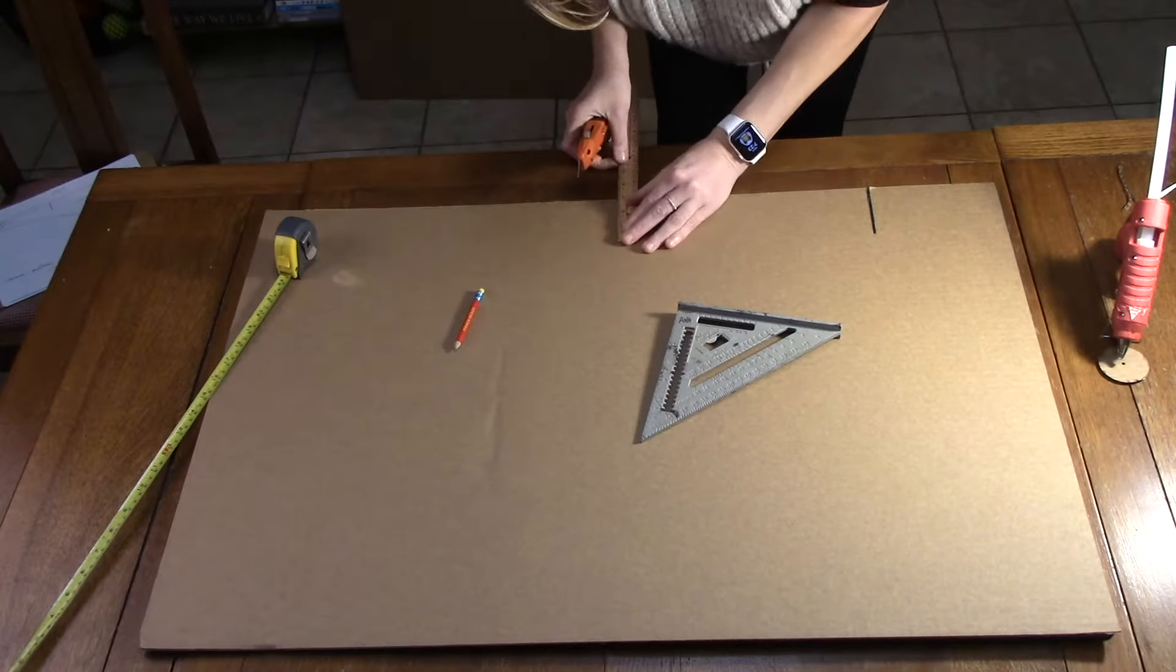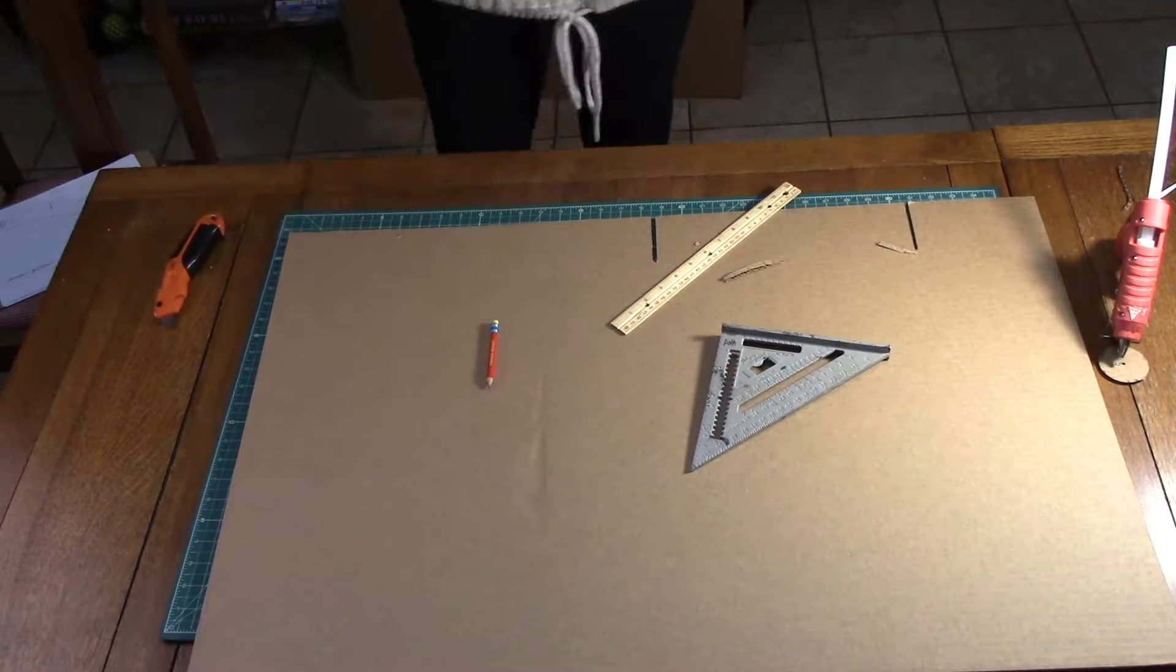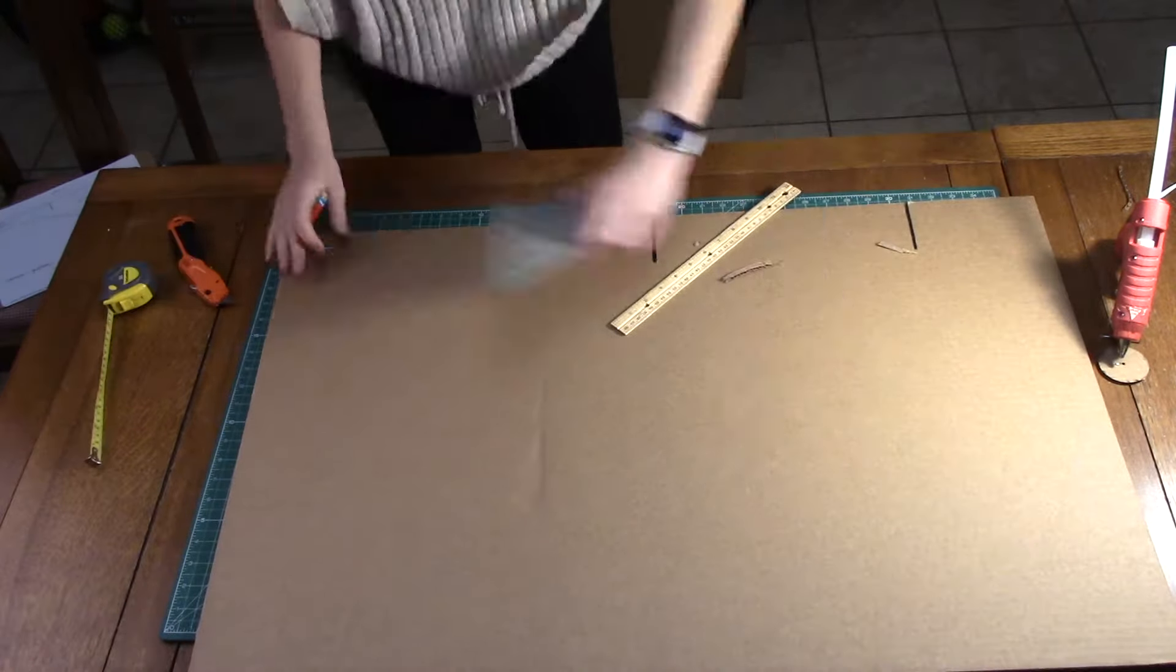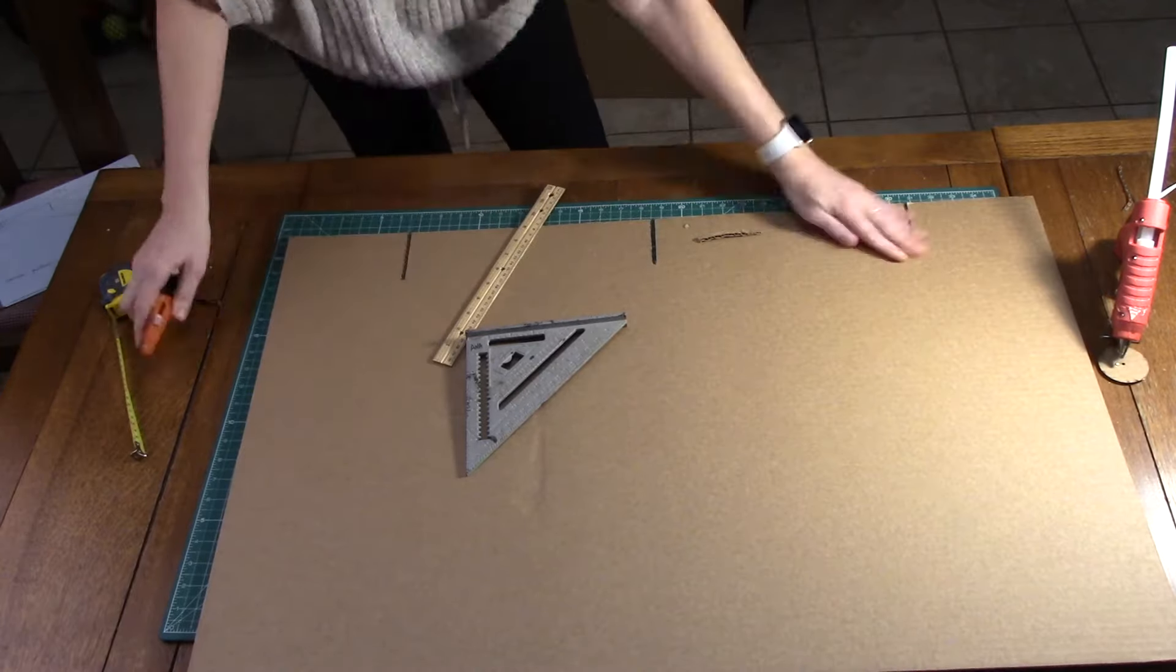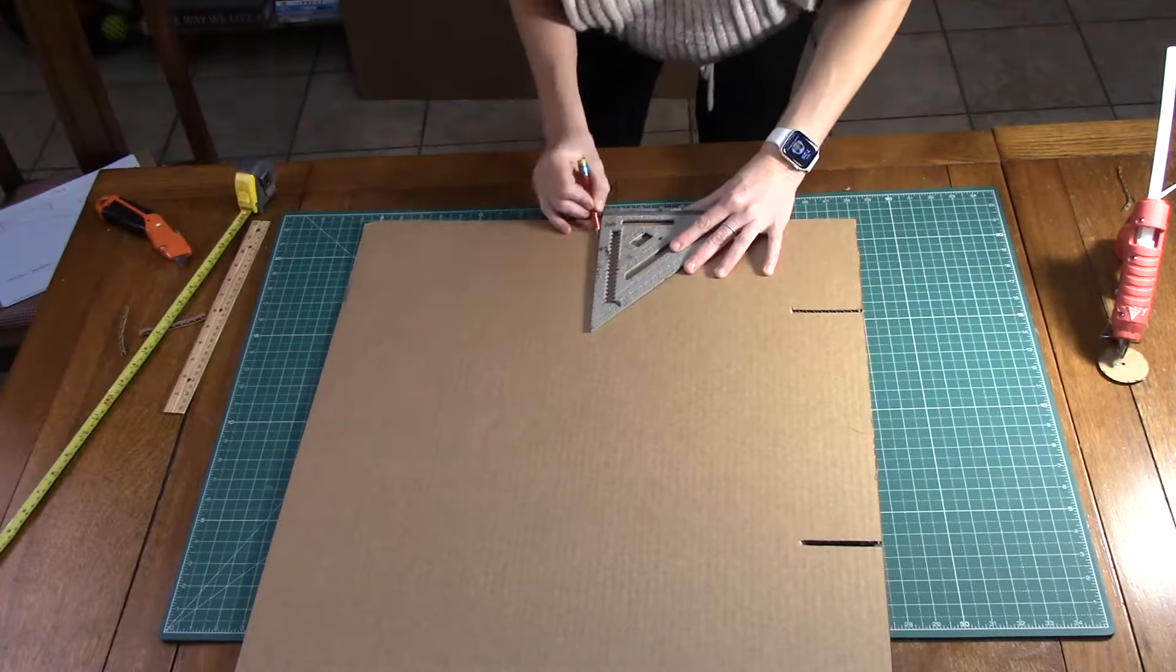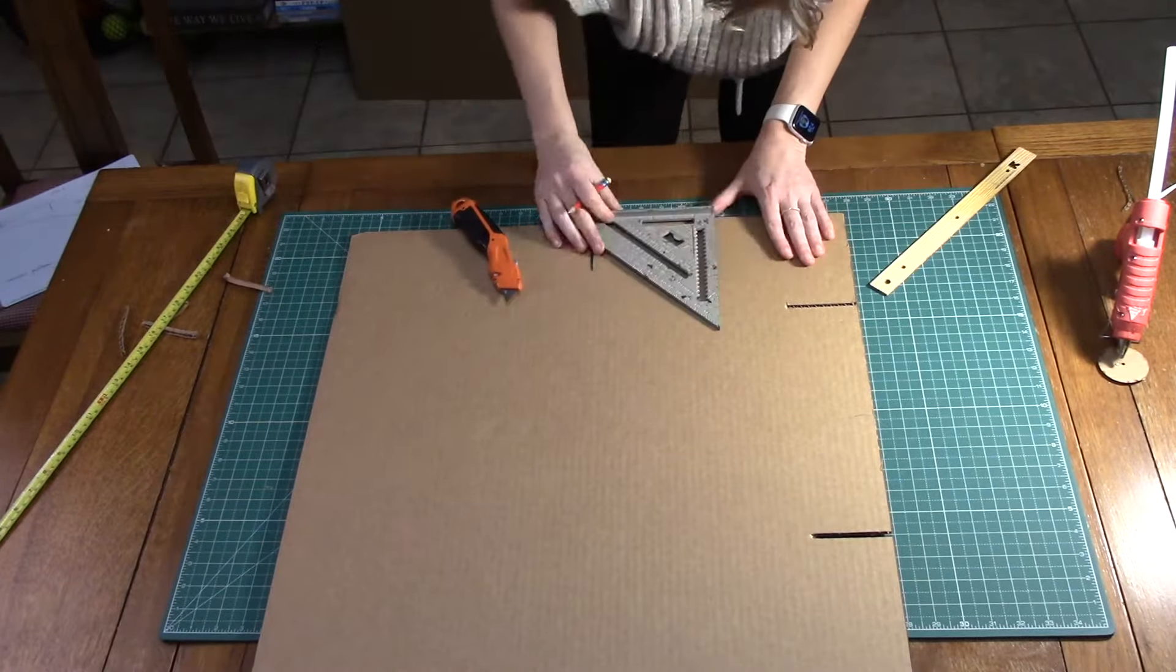Be sure you have a cutting mat underneath so you don't damage your surface. I'm making my three notches on the three-foot side of my cardboard, and then I'm making a couple more of these notches on the two-foot side of this board. I just do one piece at a time—these are going to